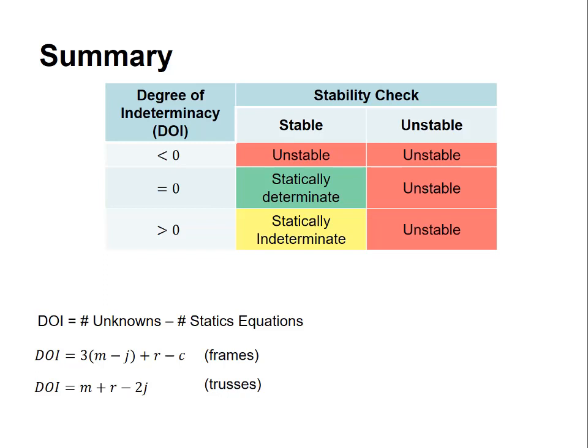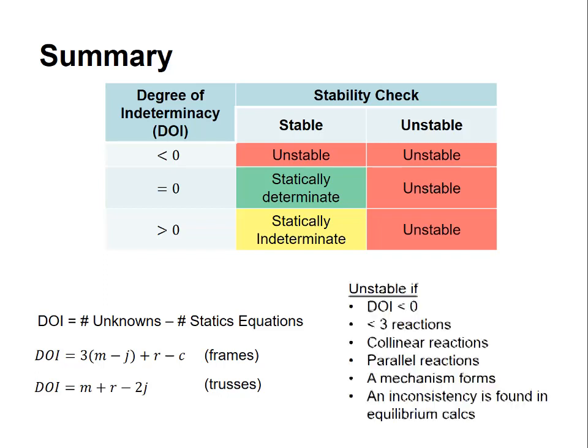In this video we did the stability check and we saw that there are several different ways to show that a structure is unstable. A structure is unstable if DOI is less than zero. If it has less than three reactions. If the reactions are collinear, meaning that the lines of action all meet at a single point. The structure is unstable if the reactions are parallel. The structure is unstable if you can visualize a mechanism that forms. Or if you try to perform equilibrium calculations and you find an inconsistency. In all those cases you can determine that a structure is unstable. And as you build experience and if you're judicious and careful with your work, lack of any of that evidence is a pretty good indicator that your structure is stable. This concludes the three video series.